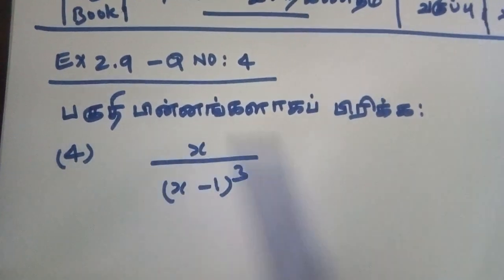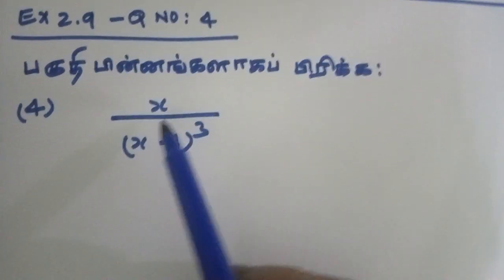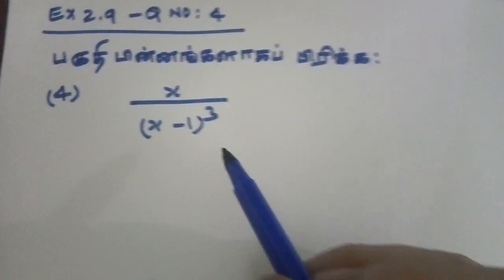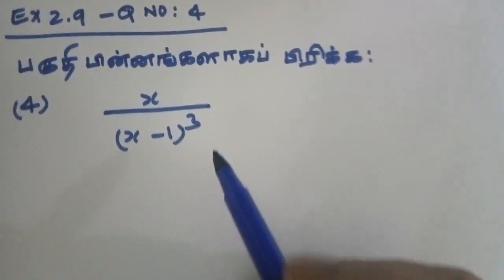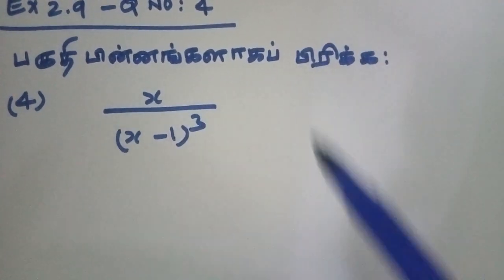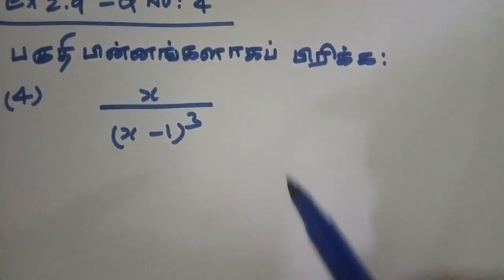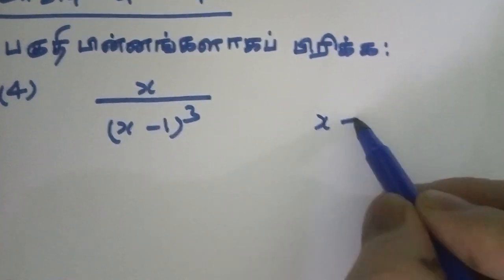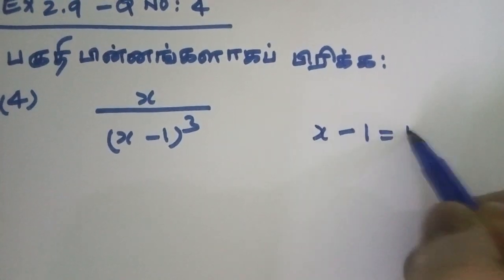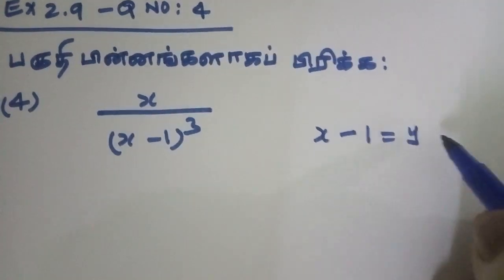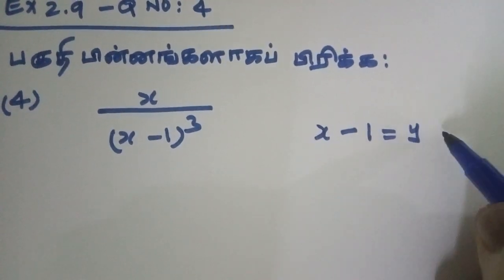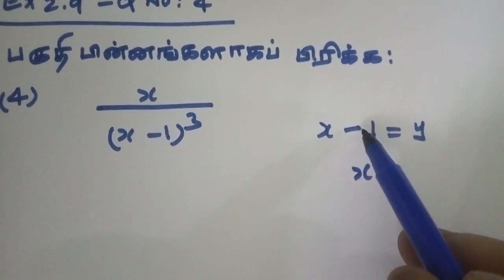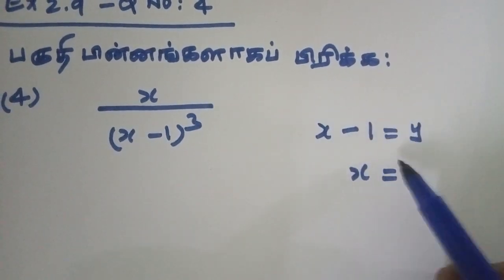We will discuss the question in the Q2.9 section. The denominator is x minus 1 y.